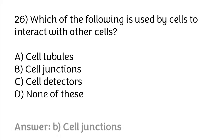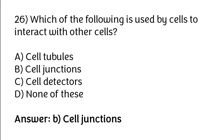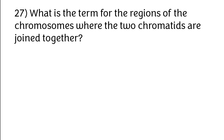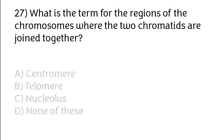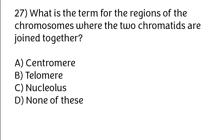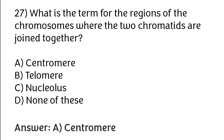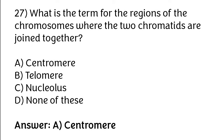The centromere is the region of the chromosome where the two chromatids are joined together. Options: centromere, telomere, nucleolus, none of these. The correct answer is option A — centromere is the region of the chromosome where the two chromatids are joined together.